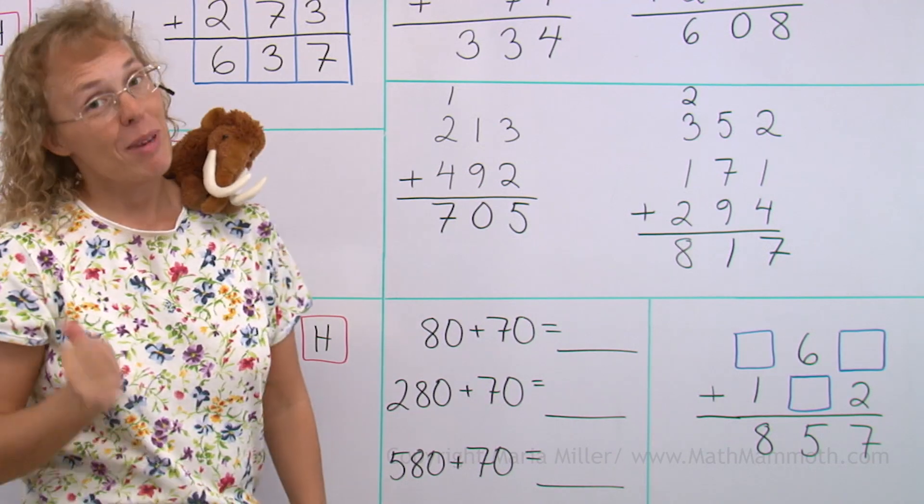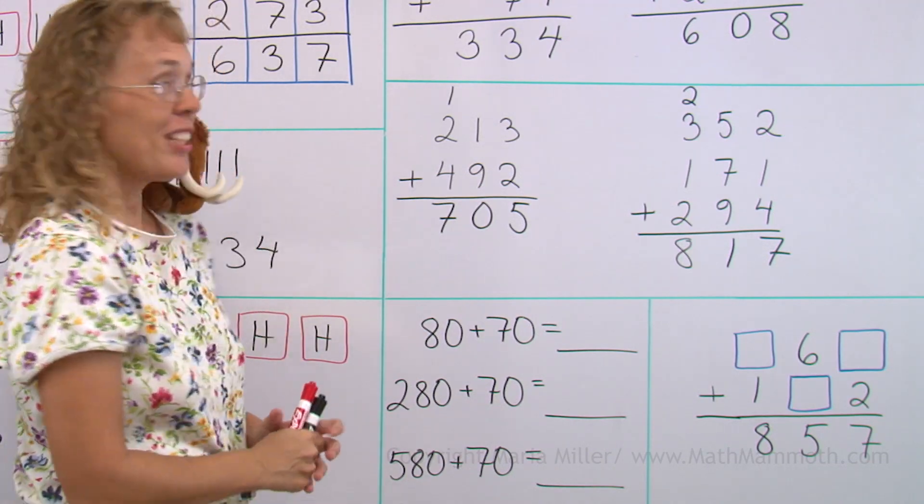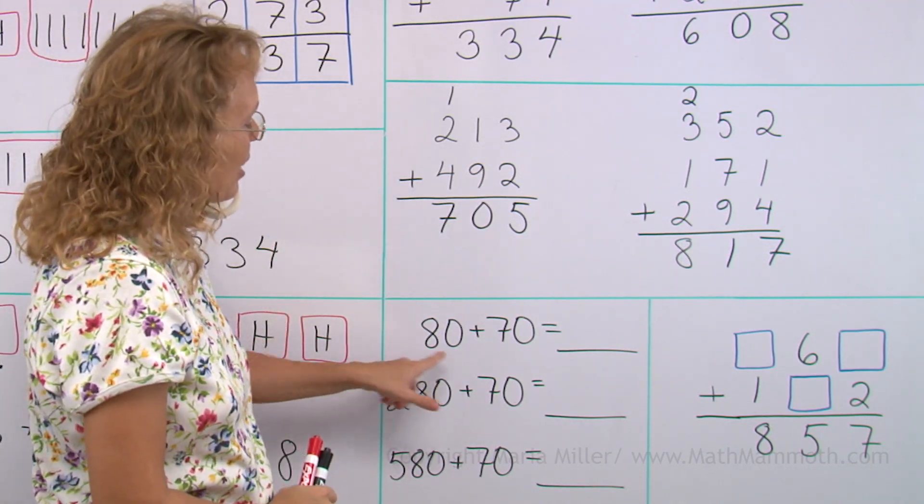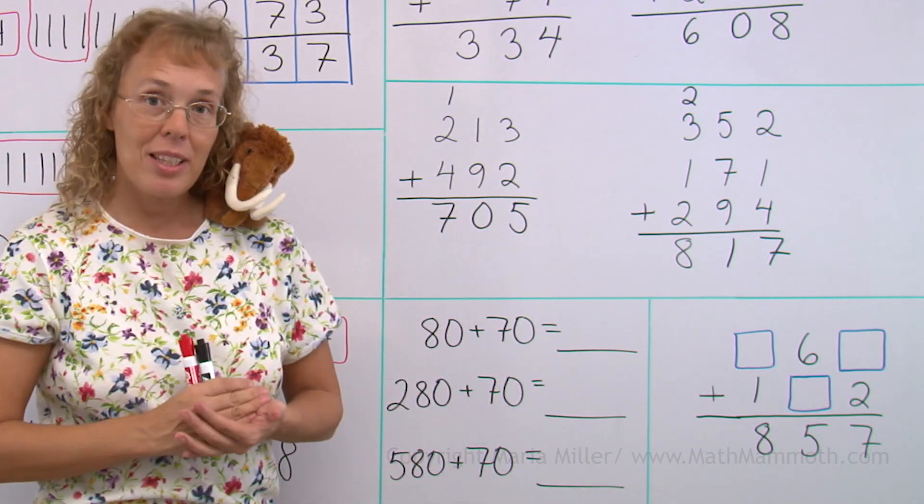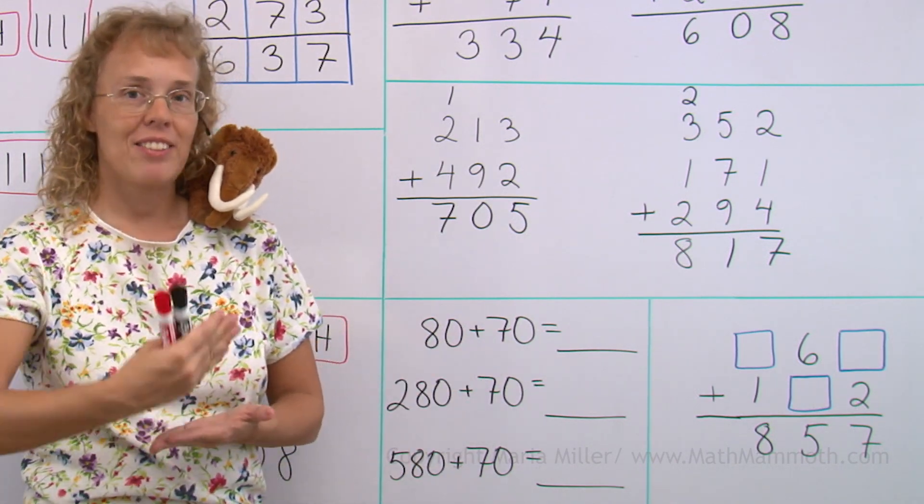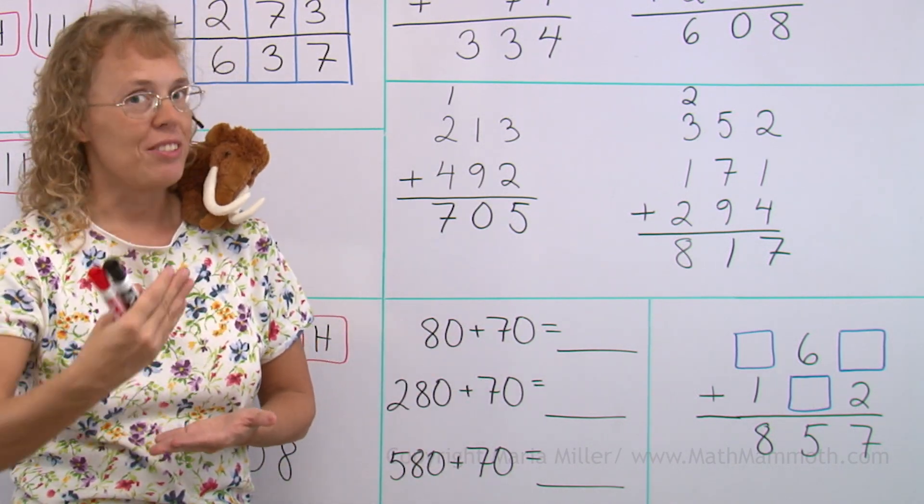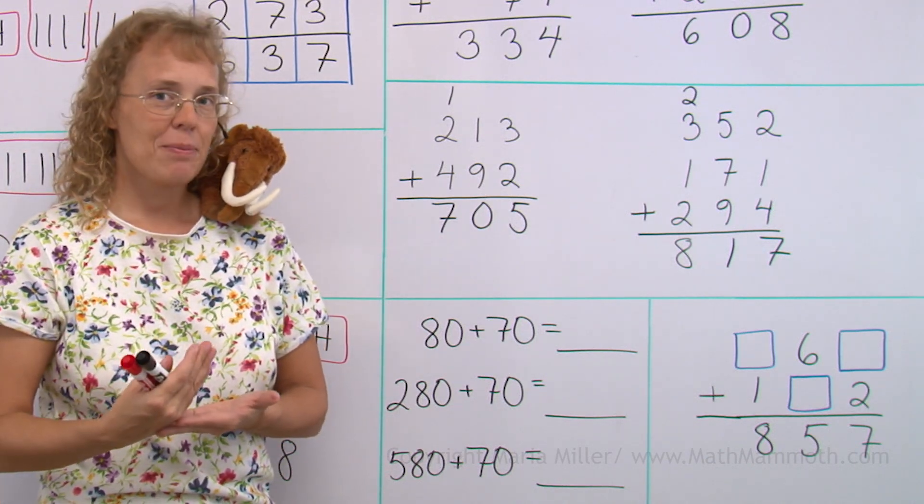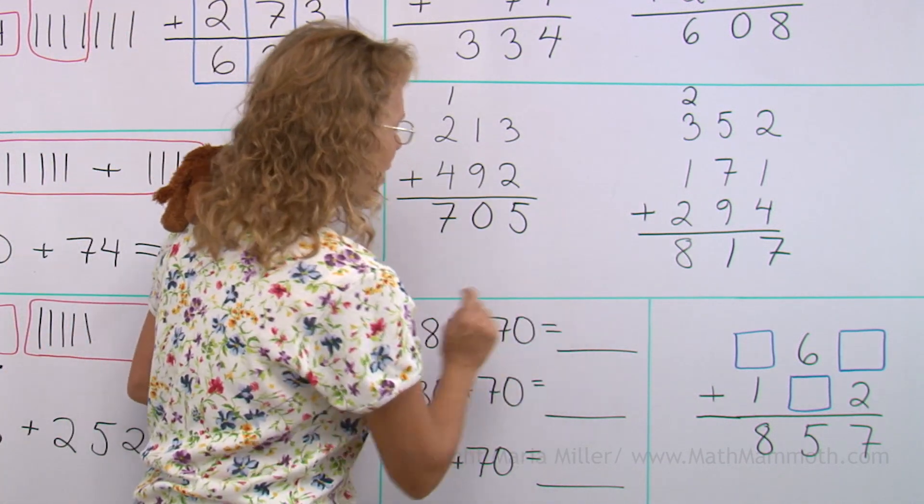Now we're going to do a little bit of mental math. We can't forget that either. Eighty plus seventy. The same thing happens. We have eight tens and seven tens, makes fifteen tens. More than a hundred, right?